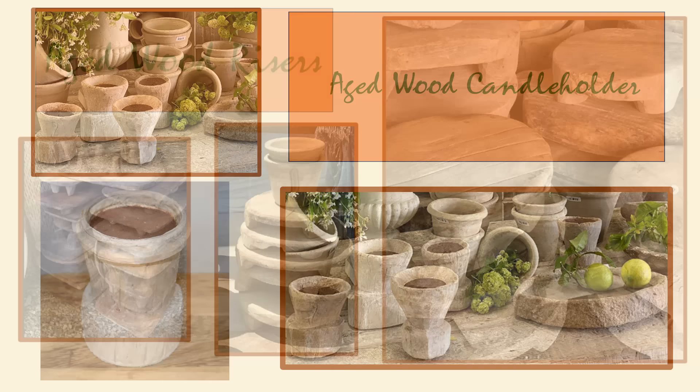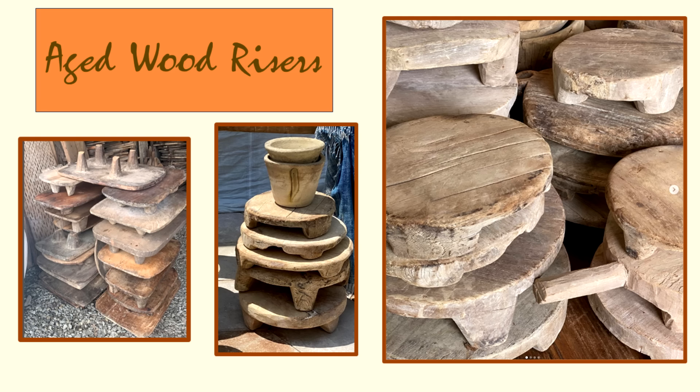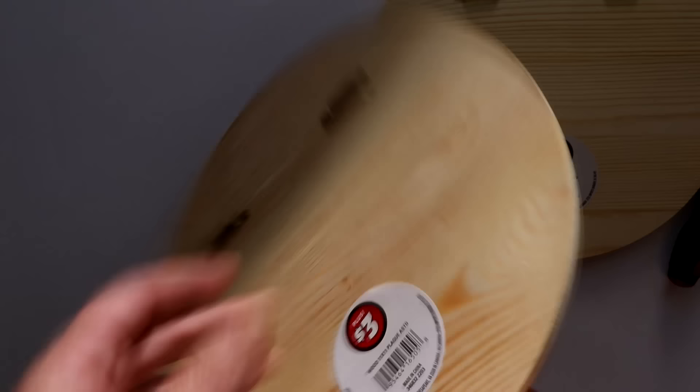For the next project, I wanted to recreate the very popular aged wood riser. These pieces also come in different shapes and sizes and with variations in color and markings making each piece unique. To make a Dollar Dupe version, I picked up two $3 wood rounds from the Dollar Plus section and then removed the metal hangers from the back.